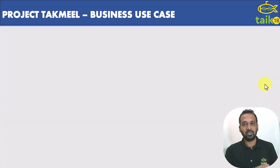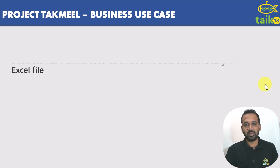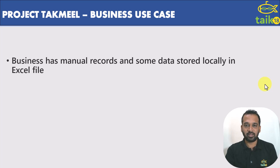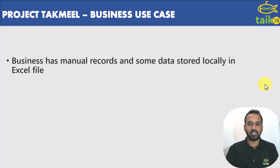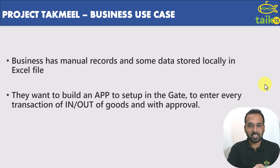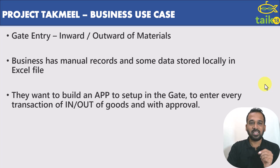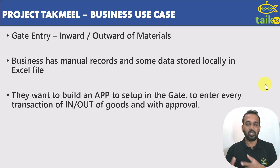The business is actually working in a manufacturing industry and they want to start with just one single phase of the project. If this goes well, then they will move on to the next phases. The business has manual records and some data stored locally in Excel files. They want to build an app to set up a gate entry to record every transaction of goods in and out with approvals. Basically they need a gate entry — inward and outward of all the materials.